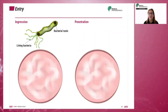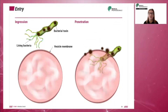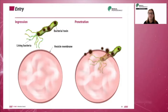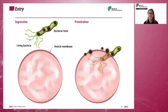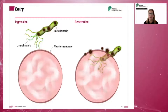An infectious microorganism will enter the host by either ingression or penetration. During ingression, the entry is through a system or via the skin and does not involve deep tissue penetration. The microorganism invades the cell's surface and excretes toxin into the host. Penetration involves the microorganism invading the epithelial barrier.